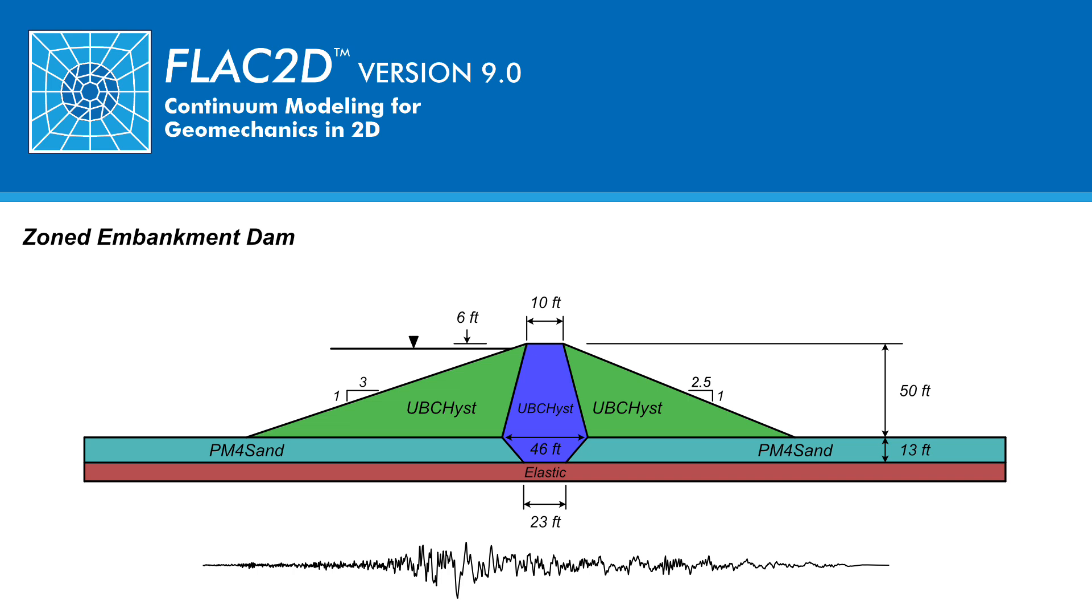In the alluvium, the PM4 sand effective stress model is used to capture the expected changes in excess pore water pressure during earthquake shaking and the associated reduction in stiffness, strength, and accumulated strains. The isotropic elastic model is used in the stiff bedrock material.